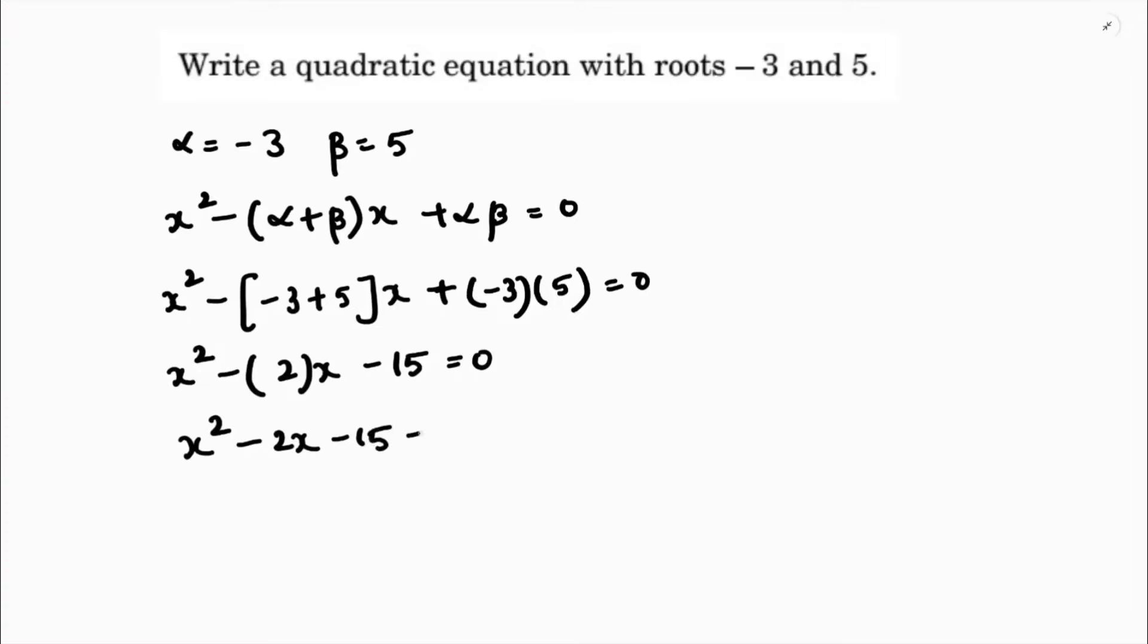You can do another method. First, you can find the sum of the zeros, which is alpha plus beta, so which is nothing but minus b by a.